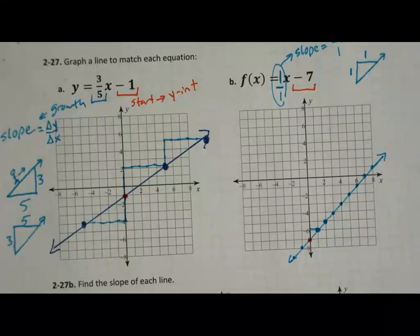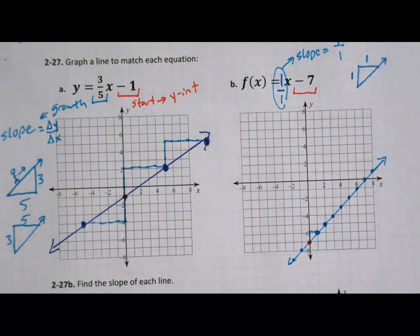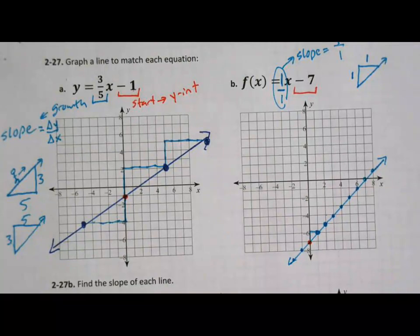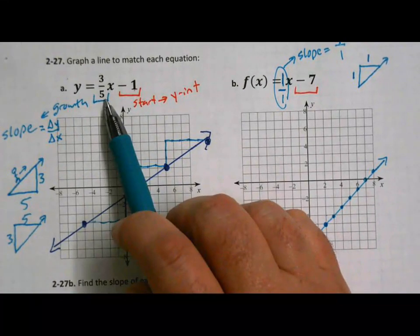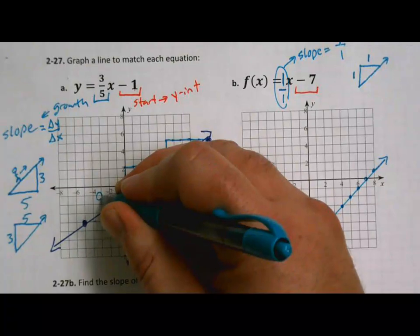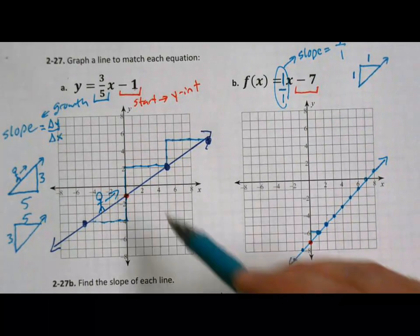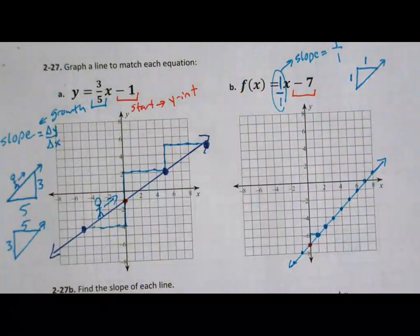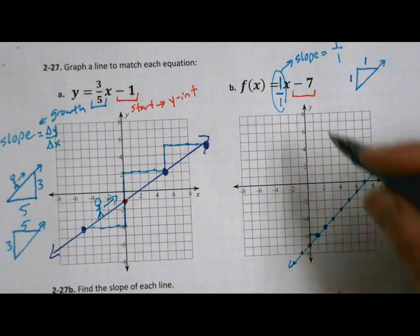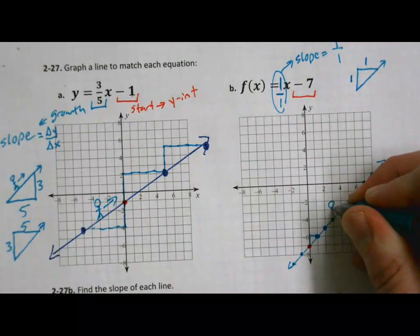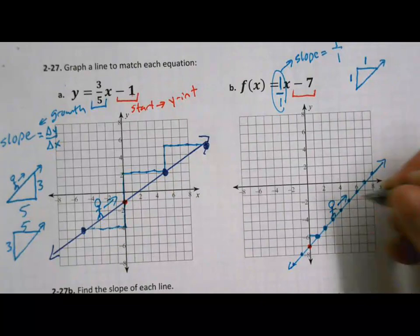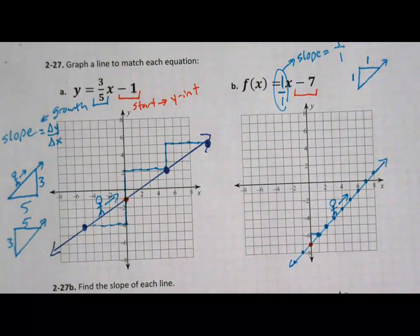Before we move on, I want you to check one thing on both problems: check the slope. If the slope is positive, you should be walking uphill from left to right. This slope is positive — when I look at this graph and imagine somebody walking from left to right, are they going uphill? They are. Same for the second one: slope is positive one over one, and walking from left to right on that graph, you're going uphill. That's a good thing to always check because it will probably be your most common mistake when you first start graphing.